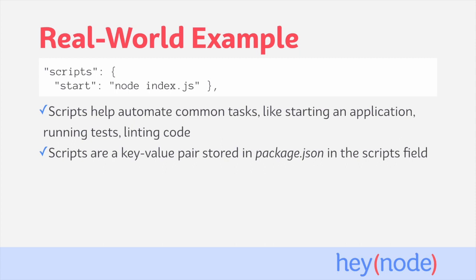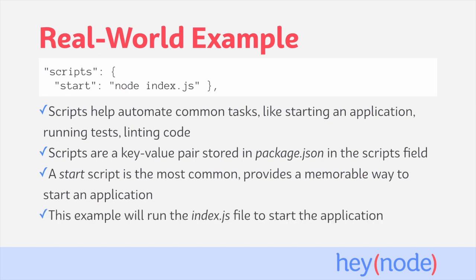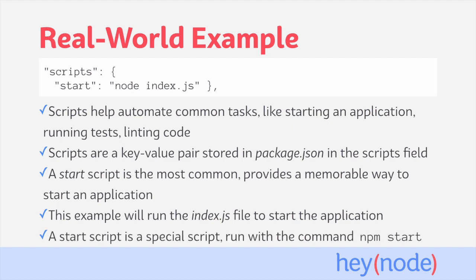Shown here is an example scripts field from a package.json file with a single script called start. The start script is the most common NPM script and provides a memorable way to start your application. The example start script you see here will run the index.js file to start the application. These are the same commands that you would use to run a file with Node.js. There's nothing special going on here besides registering the commands as a start script. The start script itself, though, is a special script in NPM, which can be executed just by running the command npm start in your project directory.